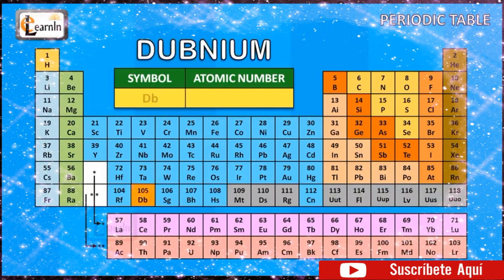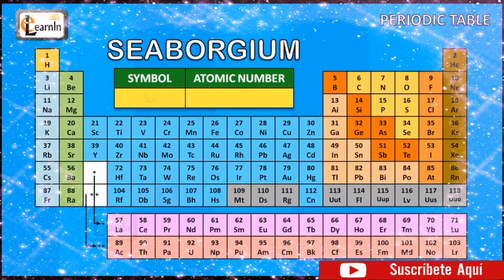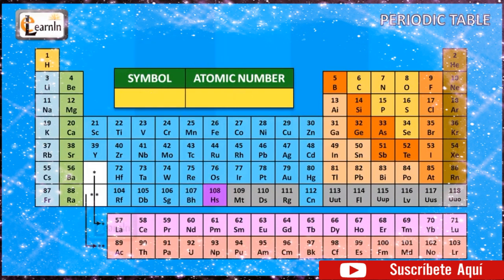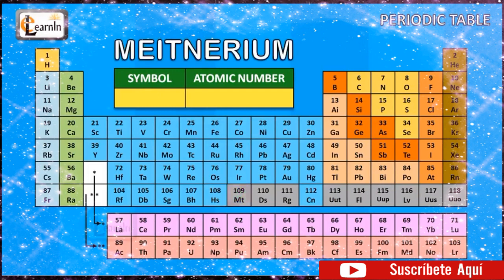The element dubnium is represented as Db and has an atomic number of 105. The element seaborgium is represented as Sg and has an atomic number of 106. The element bohrium is represented as Bh and has an atomic number of 107. The element hassium is represented as Hs and has an atomic number of 108. The element meitnerium is represented as Mt and has an atomic number of 109.